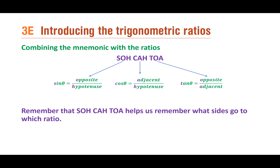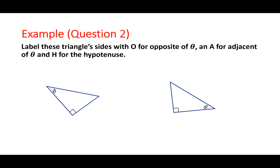For Question 2, label the triangle's sides with O for opposite of theta, A for adjacent of theta, and H for hypotenuse. Start with the hypotenuse first — it's always the one across from the right angle. The opposite is the one that makes a cross with the hypotenuse line. The adjacent is the one that's left over, just next to the angle.